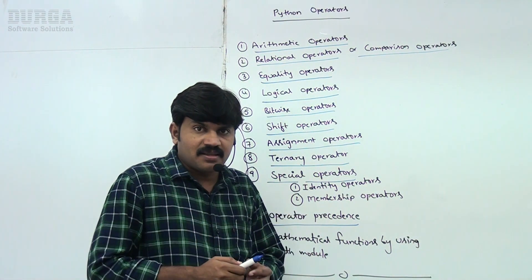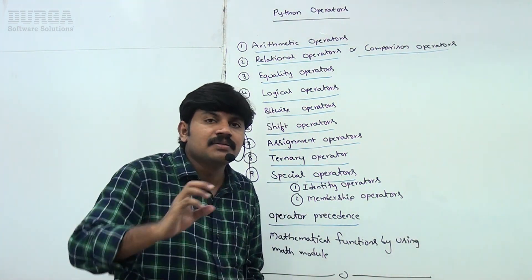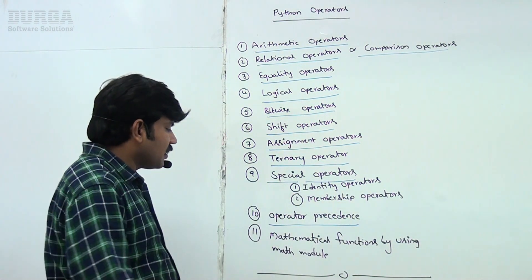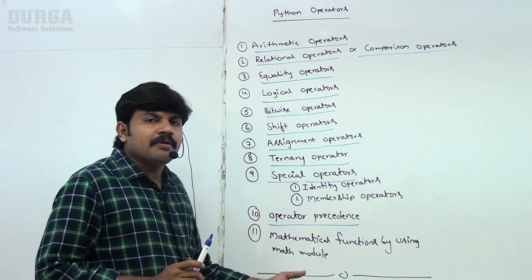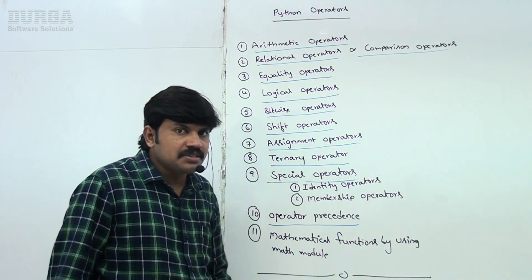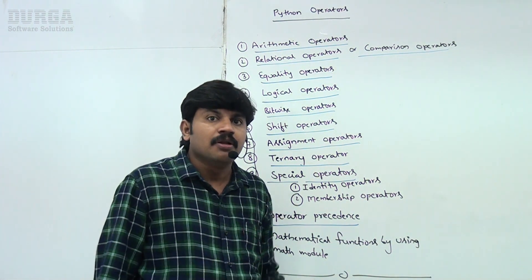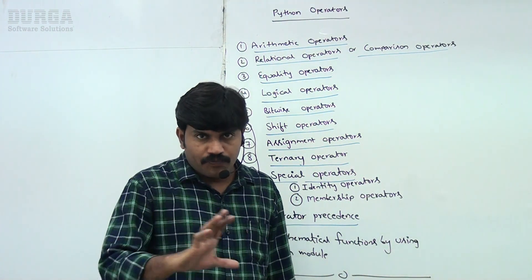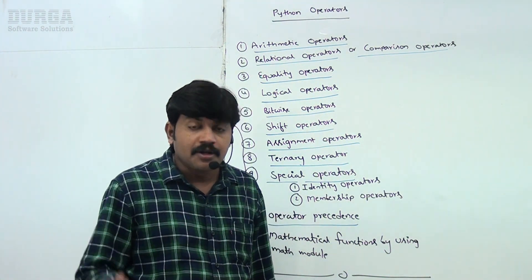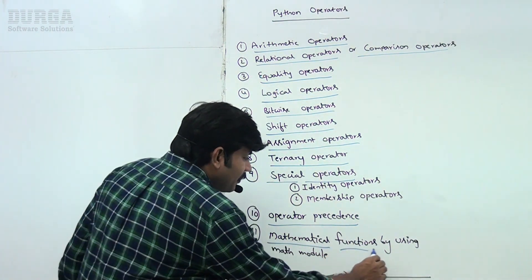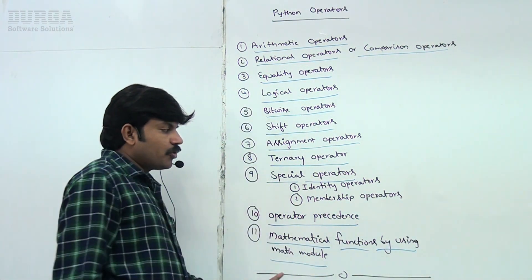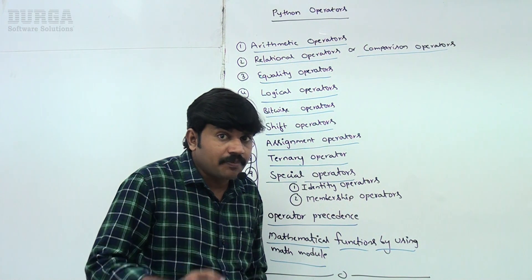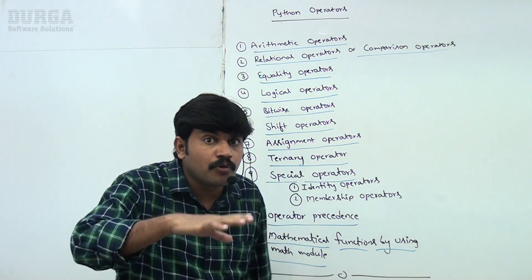Next, operator precedence - if multiple operators are there, in which order these operators will be executed is decided by operator precedence concept. Next, for performing mathematical operations, there is one module named math module. Math module defines several mathematical functions so you can use in Python to perform required mathematical operations. These are 11 topics we are going to discuss on the path of operators concept. Be ready.